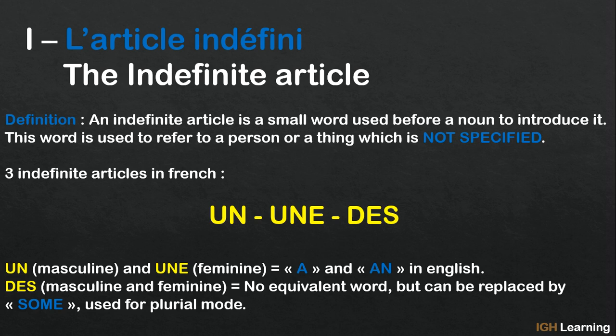In French we have three indefinite articles: un, une, and des. Un is used for masculine words, and une is used for feminine words. The equivalent of both articles is 'a' and 'an' in English. Then we have des, which is used for both masculine and feminine words. We have no equivalent word for this in English, but it can be replaced by 'some', and it is mainly used for plural nouns.